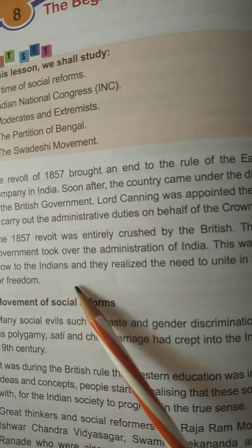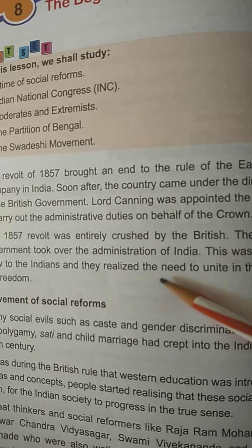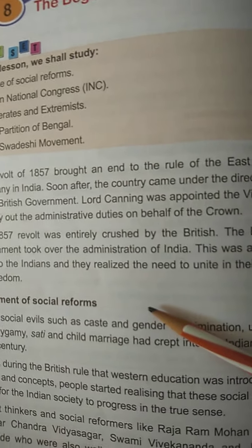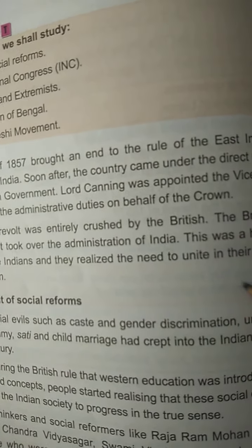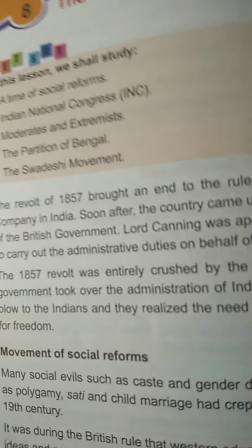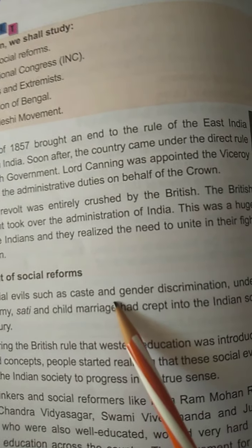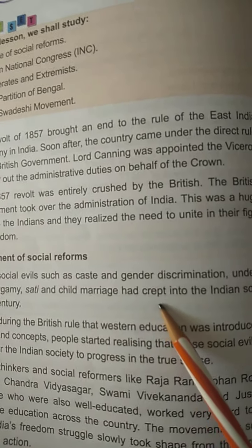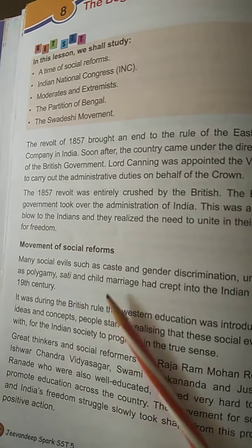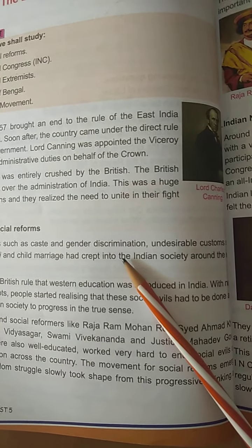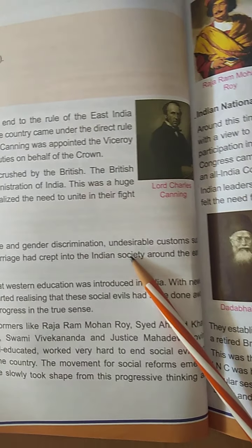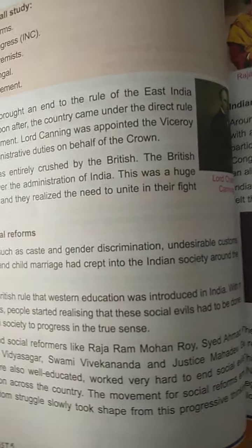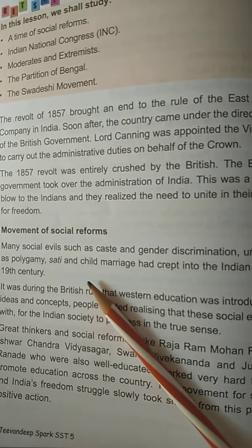This was a huge blow to the Indians and they realized the need to unite in their fight for freedom. Many social evils such as caste and gender discrimination, and undesirable customs such as polygamy, sati, and child marriage had crept into Indian society around the early 19th century.